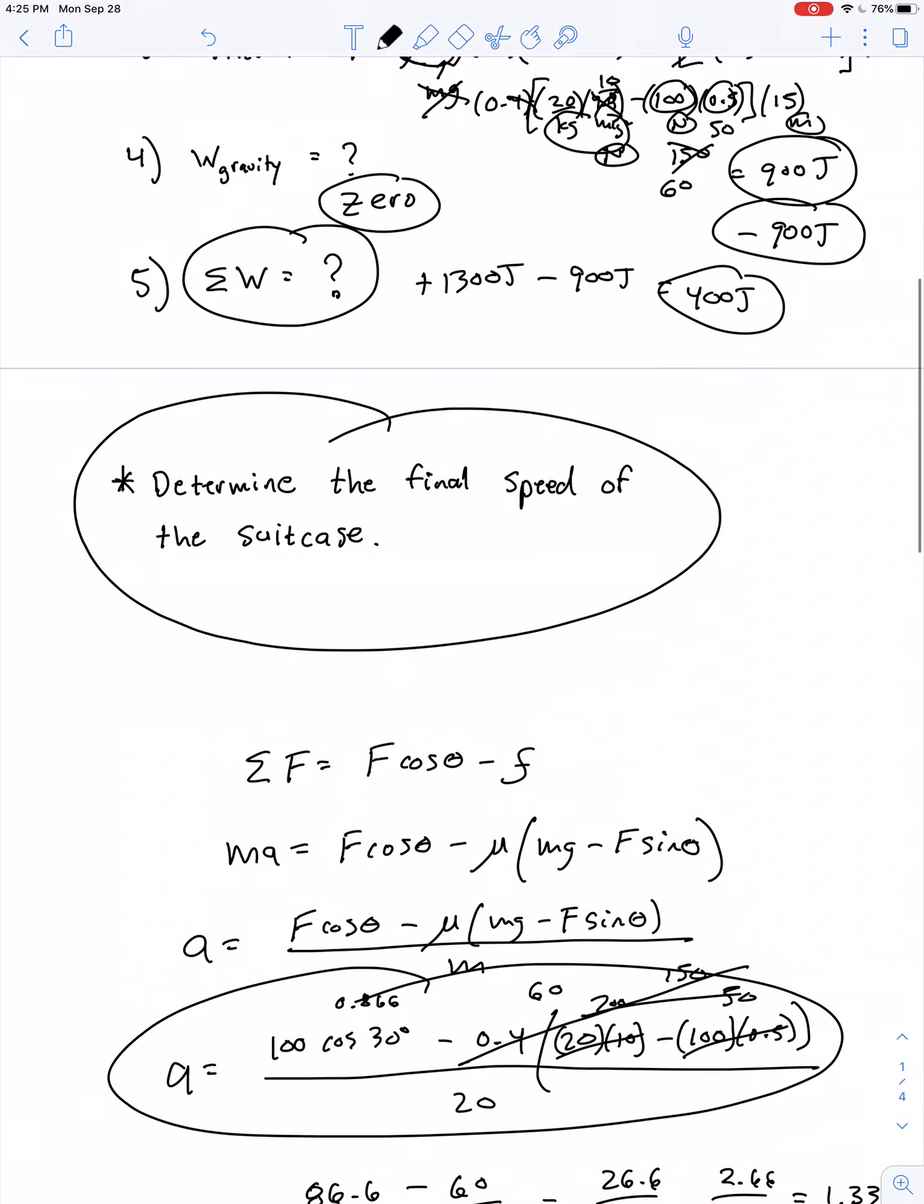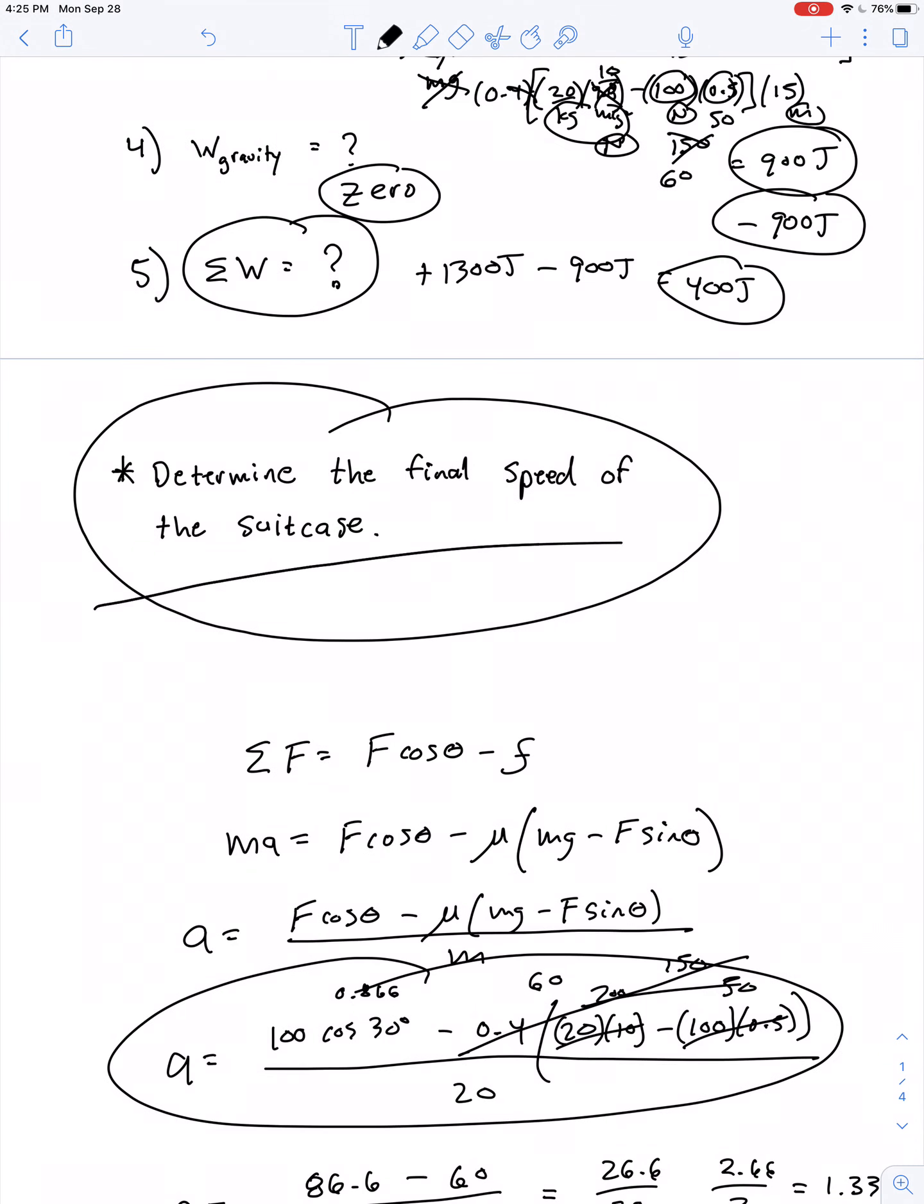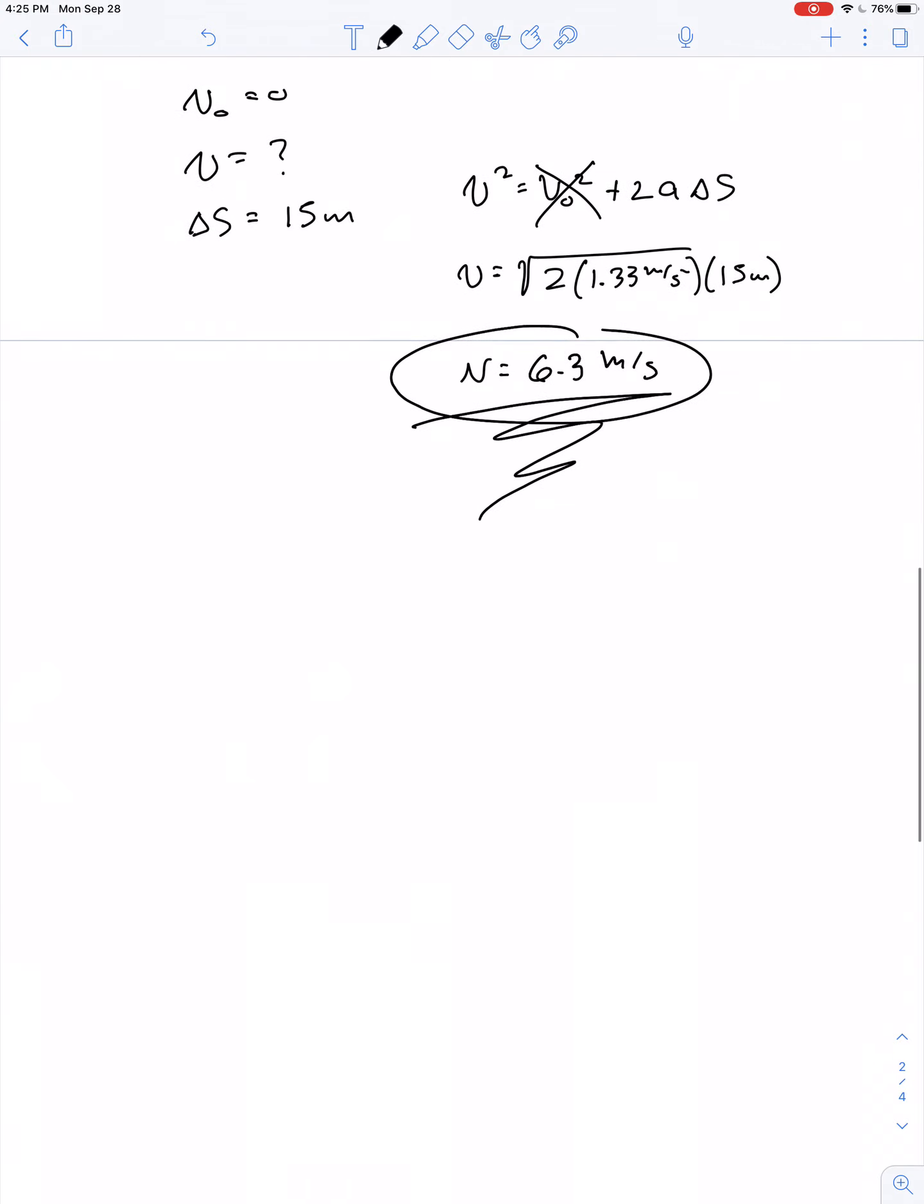What we'll find in the next approaching lesson is another way that we can find the final speed if we've already calculated the net amount of work. So here's a preview of coming attractions. There's something known as the work kinetic energy theorem, which basically states the net amount of work done on any object is always equal to that object's change in a quantity known as kinetic energy, which is energy of motion.